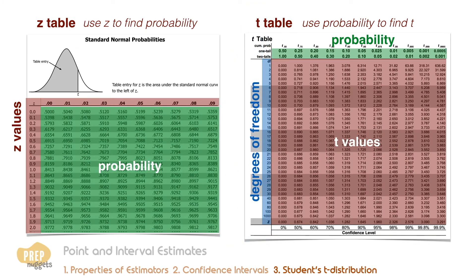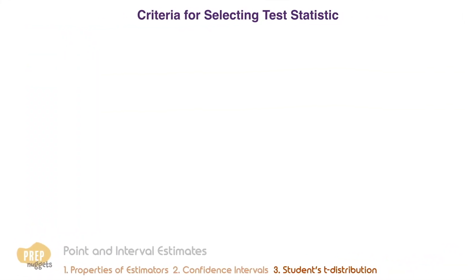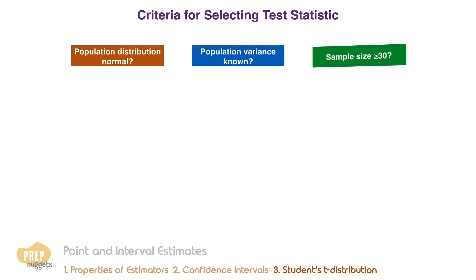One of the things that candidates have difficulty with is to determine when to use the Z statistic and when to use the T statistic. One easy way to remember is to ask these three questions: Is the population normally distributed? Is the population variance known? Is the sample size at least 30?